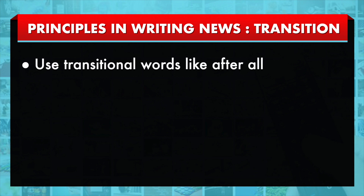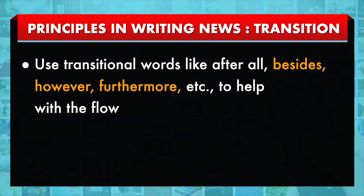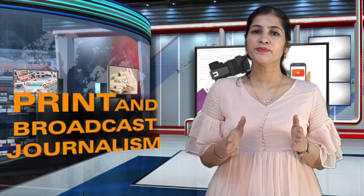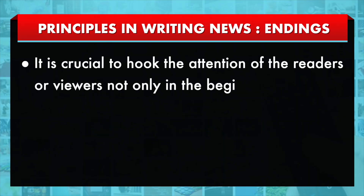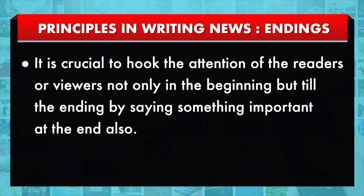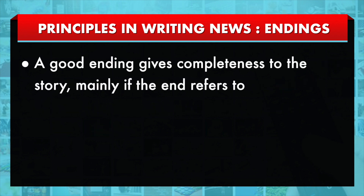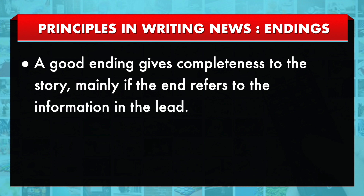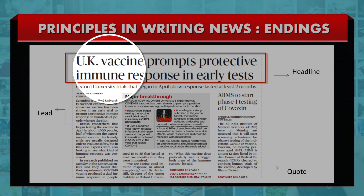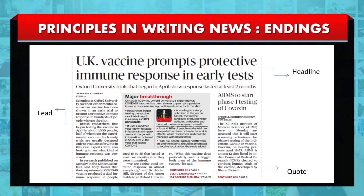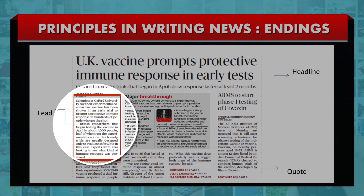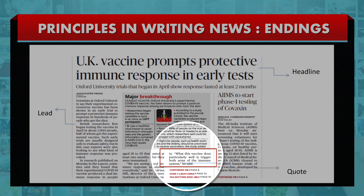The primary purpose of using transition is to add information, to explain, and to help the story flow. Use transitional words like 'after all,' 'besides,' 'however,' 'furthermore,' etc. The fifth principle is ending. It is crucial to hook the attention of readers or viewers not only at the beginning but through to the ending by saying something important at the end. A good ending gives completeness to the story, especially if the end refers back to information in the lead. A newspaper article example shows the headline at the top, the lead in the first paragraph, and a quote in the middle.